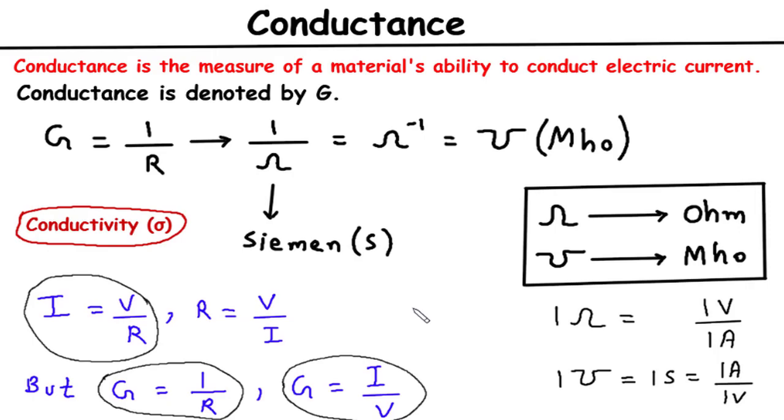By grasping the relationship between conductance, resistance, and voltage, we can design efficient electrical systems, analyze complex circuits, and troubleshoot issues more effectively.